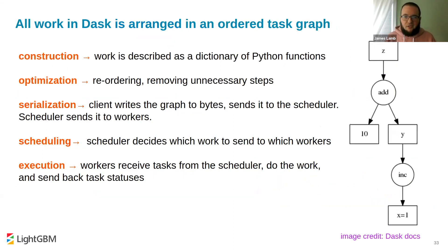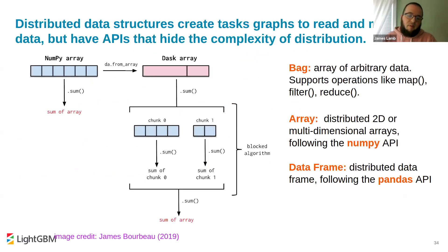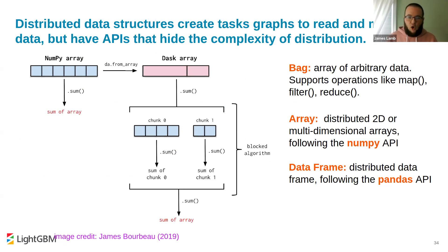Dask arranges all work into an ordered task graph of futures — function calls with arguments. Dask understands which function calls can be evaluated in parallel and which rely on upstream computations, and handles having all workers do the described work. When you use built-in Dask collections — Dask array, Dask bag, Dask DataFrame — these are higher-level abstractions that look like pandas DataFrames or NumPy arrays, but operations like sum or head get turned into Dask task graphs, with the framework distributing work over the cluster.